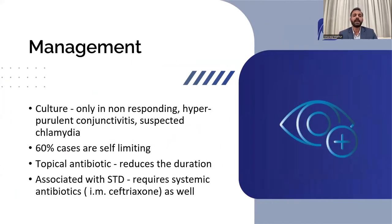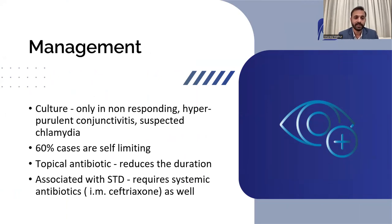Coming to the management of bacterial conjunctivitis: again, uncomplicated cases are self-resolving in one to two weeks. Culture is done only in cases not responding to treatment, those producing hyperpurulent conjunctivitis with a copious amount of discharge, and when you suspect chlamydia. Chlamydia in most cases is a sexually transmitted disease, so if the partner is also showing symptoms and there is a large amount of watery discharge, you should suspect chlamydia.